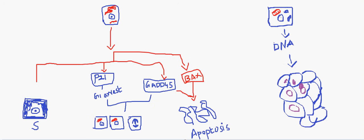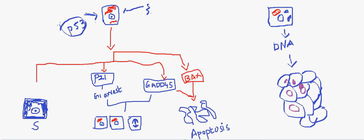Now we'll look at a picture to understand the function of the p53 gene. This is a normal cell, and imagine when a cell is under stress — it might be from ionizing radiation, certain carcinogens, or certain mutations — that could give a certain amount of stress to a normal cell. A normal cell has p53 in it, and whenever the cell is under stress, the p53 gets activated. Once activated, it has three mechanisms by which it can prevent the cell from turning into malignancy.